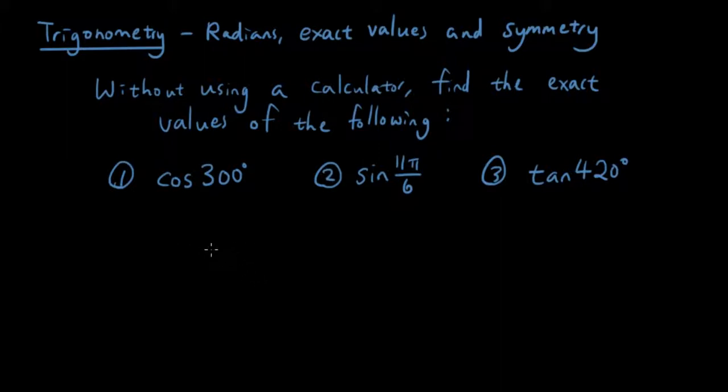Now when I do these questions I like to draw the unit circle simply because it gives me a visual of what they're talking about. So this is 0 degrees, we got 90, 180, 270. So 300 would be somewhere here on the unit circle. 300 would be somewhere here and the angle here would be, because this is 360 degrees, this is 60 degrees.